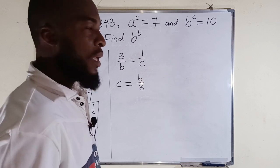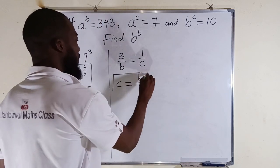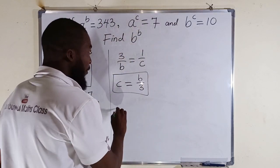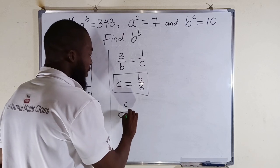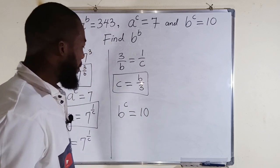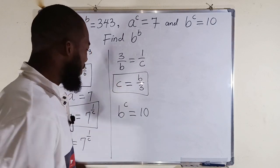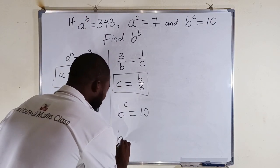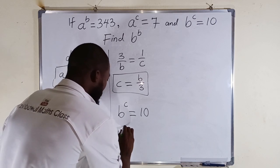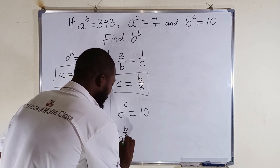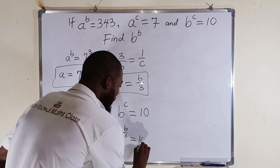Now let us take our equation number 3, the last one. We have b to the power of c equal to 10. Well, we have seen that c is equal to b divided by 3. To the left-hand side, we have b to the power of b divided by 3 equal to 10.